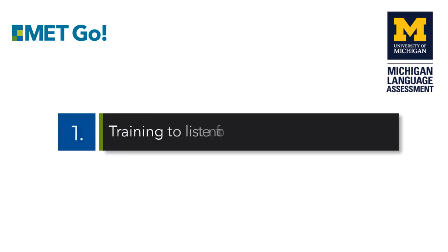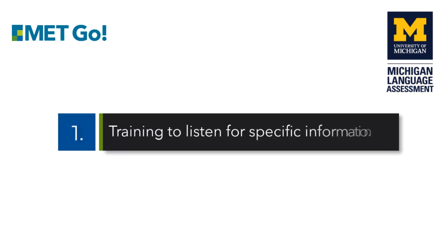Our first tip is training to listen for specific information. This is a really simple exercise for developing listening, and it can be done in class or by sharing your screen while teaching online. For this activity you'll need some sort of audio recording. It could be a recording of someone reading from a textbook, a podcast, a video, or even better, a song.